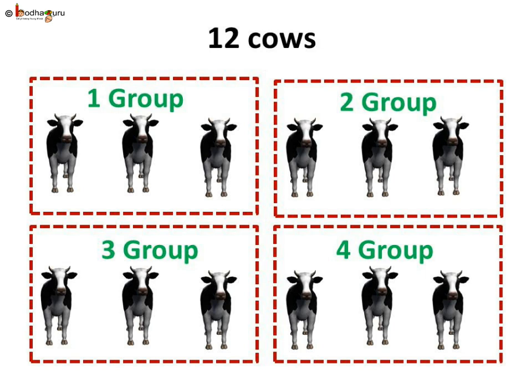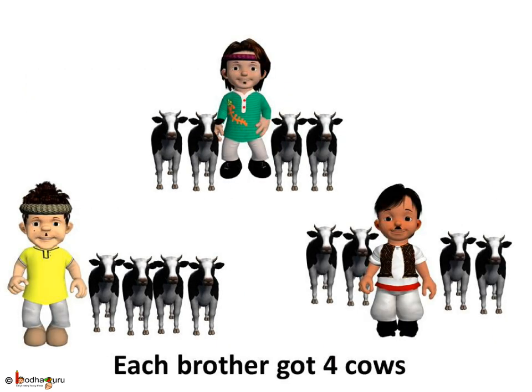Or we can say that there are one, two, three, four — yes, four groups of three cows. Twelve cows means four groups of three cows. So there are four threes in twelve. From each group of three cows, each brother received one cow. So from four such groups, each brother received four cows.